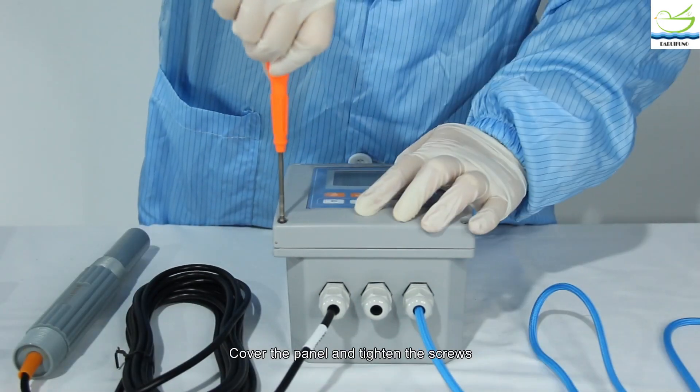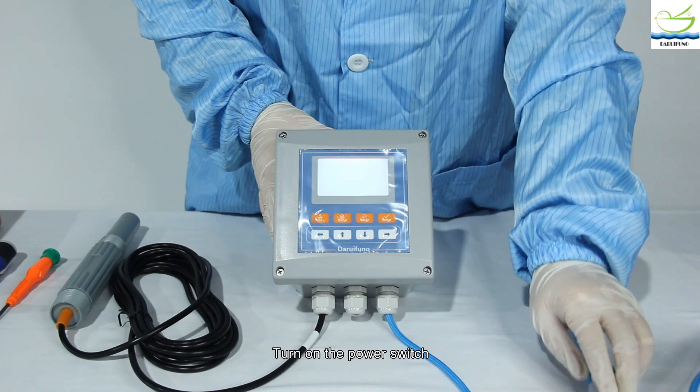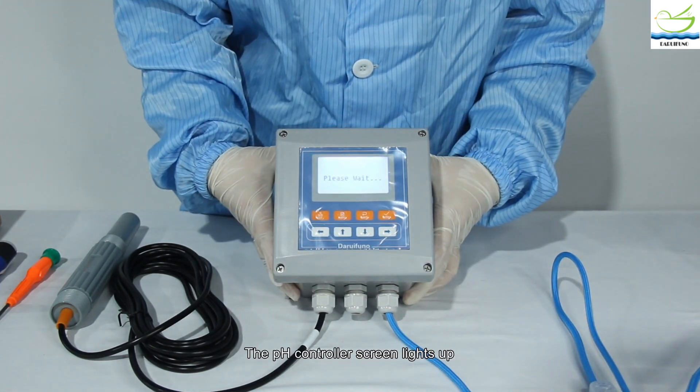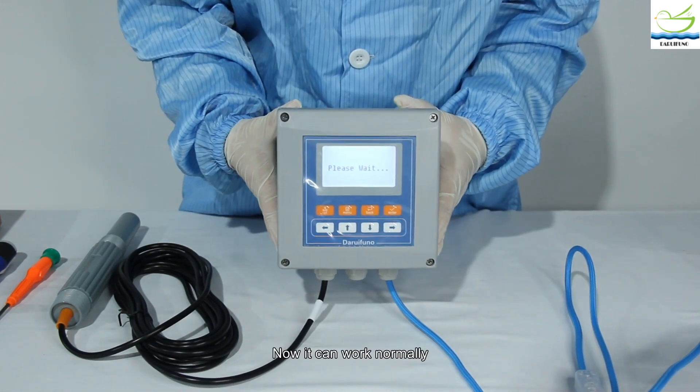Cover the panel and tighten the screws. Turn on the power switch. The pH controller screen lights up. Now it can work normally.